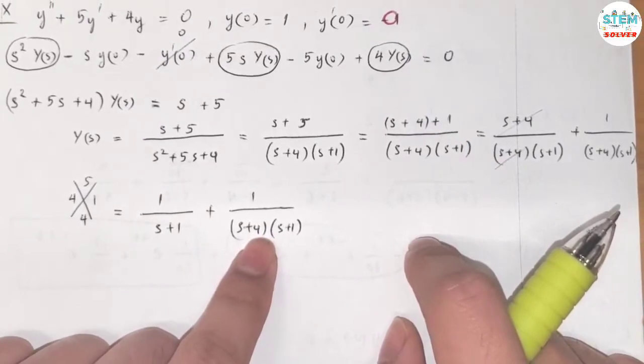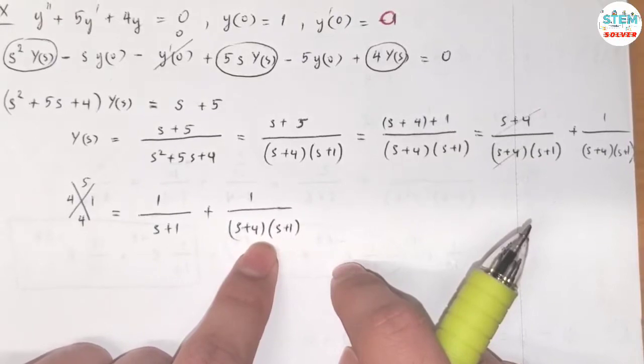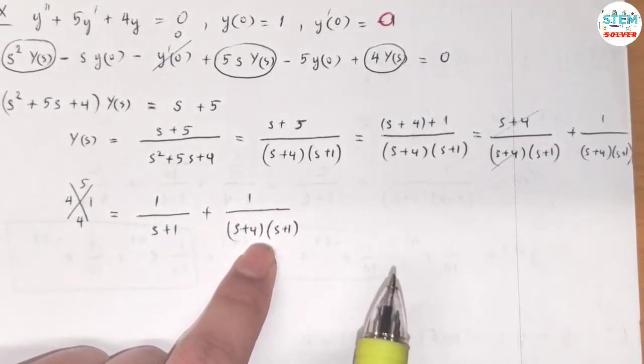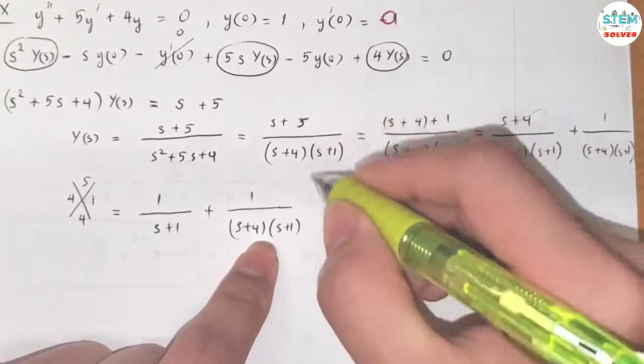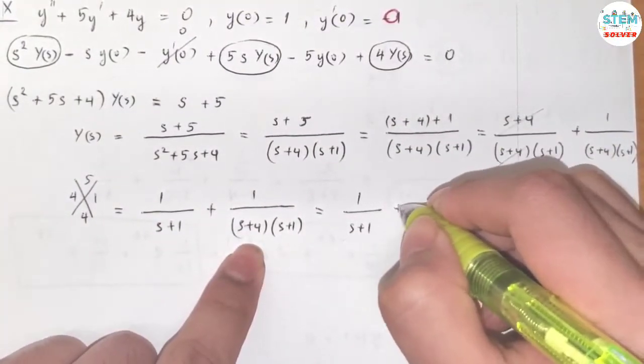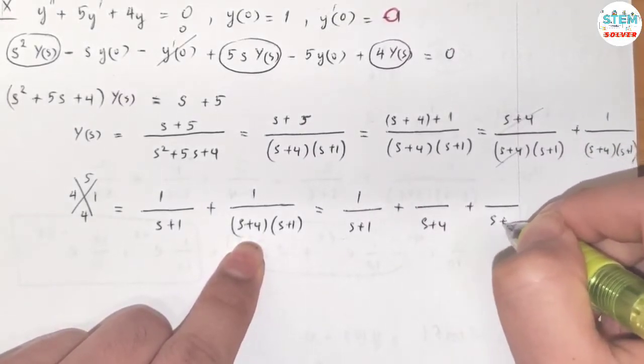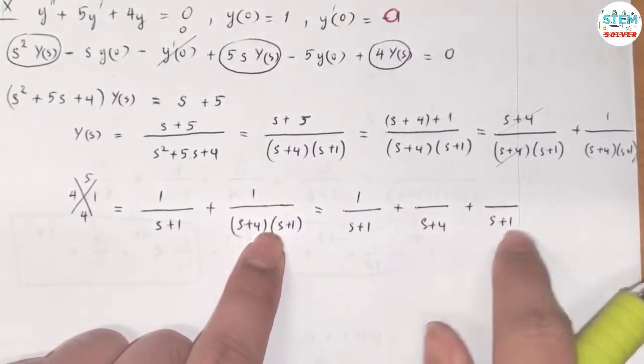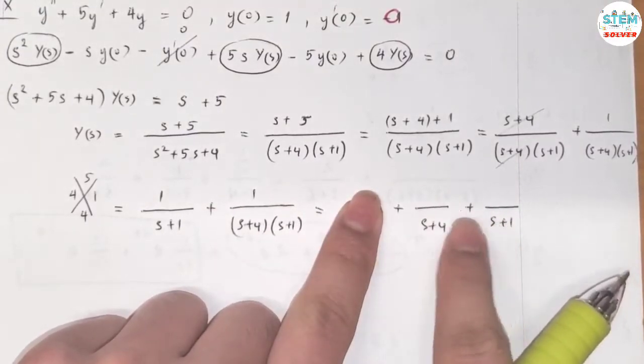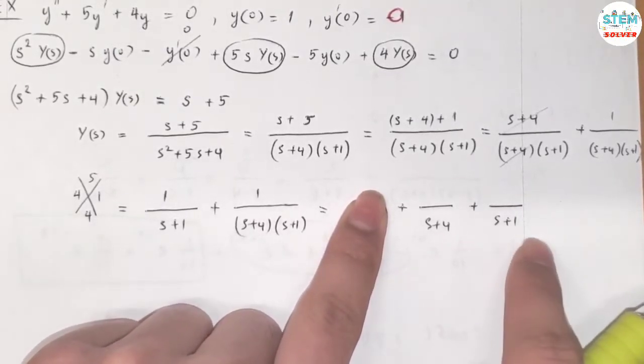Now, for this one, there's nothing we can do like we did for this one, so we have to fall back to partial fraction method. But here is another magic for you. Let's rewrite this first. For this one, we are going to have something over (s + 4), plus something over (s + 1). This can be obtained from the summation of this.